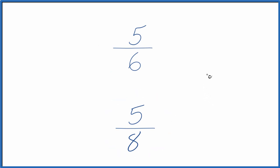What we need to do is find a common denominator, something that 6 and 8 both go into. If we get the same denominator for these fractions, then we can just compare the numerators to figure out whether 5/6 is greater than 5/8 or 5/8 is greater than 5/6.